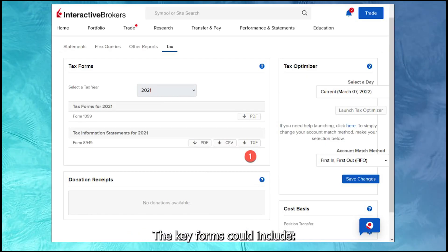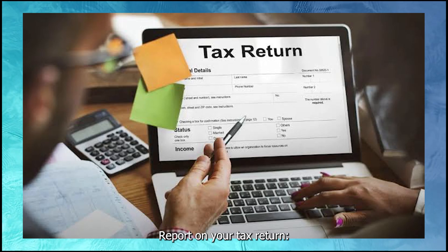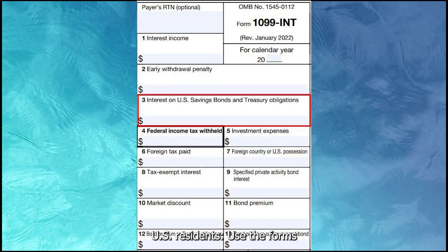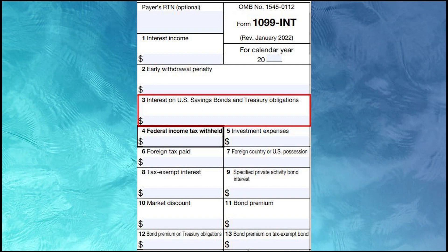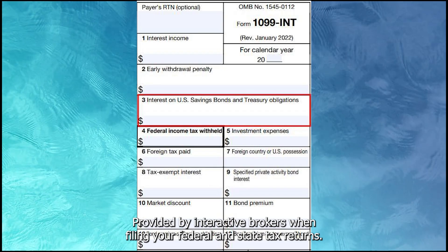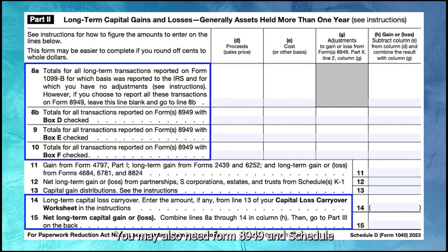The key forms you could include on your tax return: U.S. residents use the forms — for example, 1099-B, 1099-INT, etc. — provided by Interactive Brokers when filing your federal and state tax returns. You may also need Form 8949 and Schedule D to report capital gains or losses.